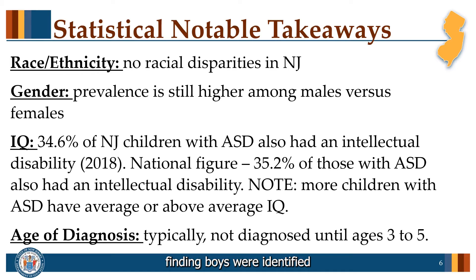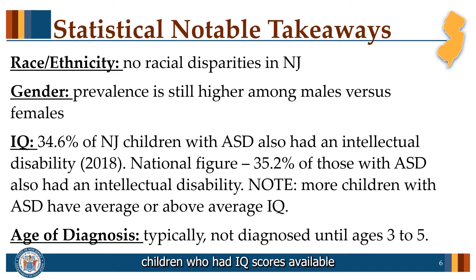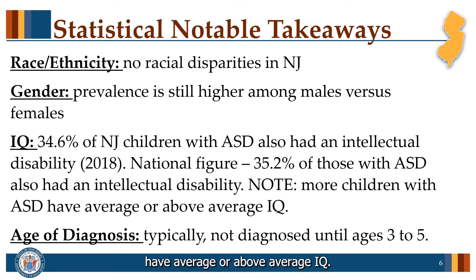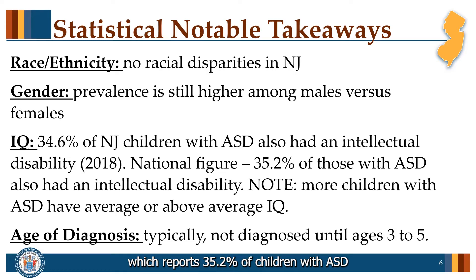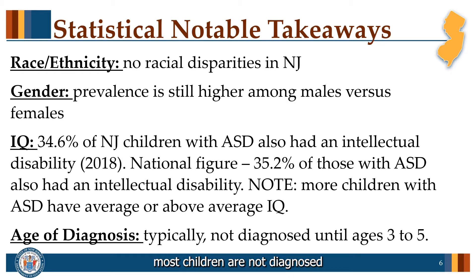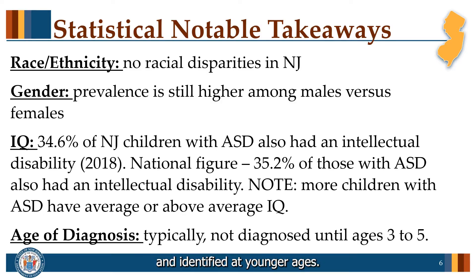Consistent with previous national and New Jersey findings, boys were identified at a rate four times that of girls. In New Jersey, of children who had IQ scores available, 34.6% also had an intellectual disability, meaning that 65.4% of children with ASD have average or above average IQs. This percentage is consistent with national figures, which report 35.2% of children with ASD as having an intellectual disability. Even though ASD can be diagnosed as early as age two, most children are not diagnosed until ages three to five. The goal remains to diagnose ASD as early as possible to ensure children have access to educational supports as soon as possible.